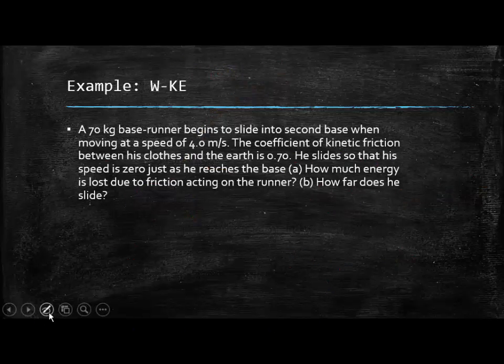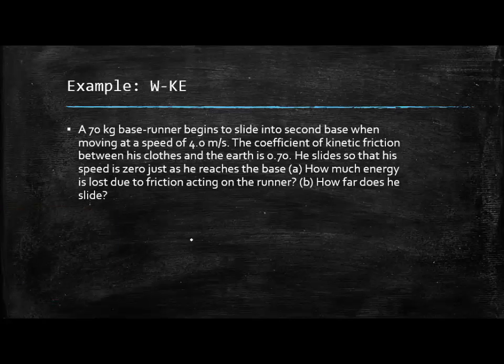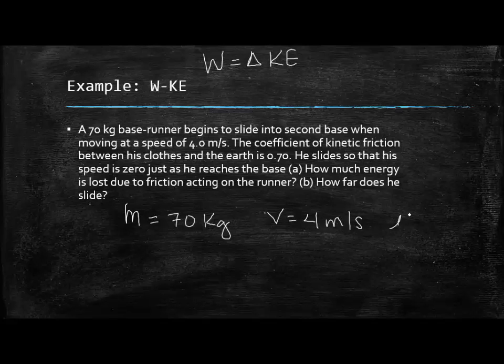Alright, so let's look at this example and let's try to do this one using that concept. Work is equal to change in kinetic energy. So in this one, we have a 70 kilogram base runner slides into second base when he's moving at a speed of 4 meters per second. And the coefficient of kinetic friction for him is 0.7. So he slides so that his speed is 0 just as he reaches the base. How much energy is lost due to friction acting on the runner? And then part b is how far does he slide?